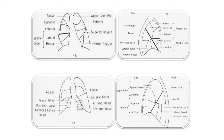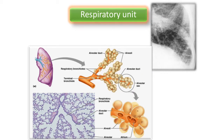The image shows a respiratory unit, which is well known to medical students. As radiologists, we also need to understand respiratory units because in congestive cardiac failure or mitral valvular disease, Kerley lines appear. We must differentiate whether a line is a fibrotic band or a Kerley line. Knowing the pathology of respiratory units is important and will be discussed in later lectures.